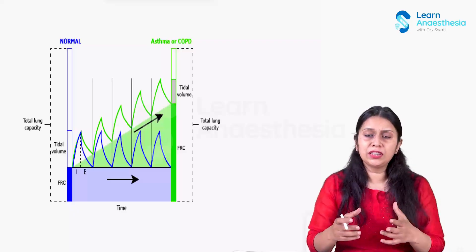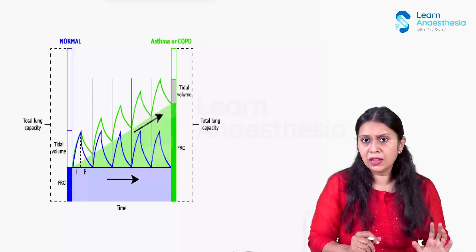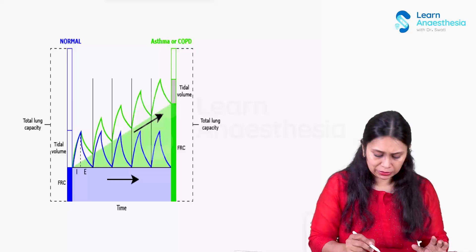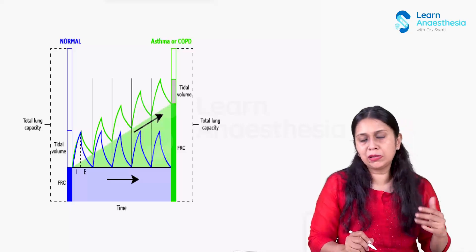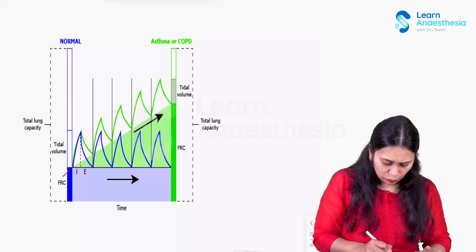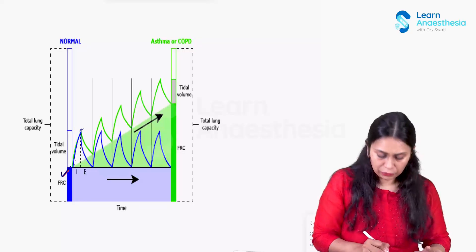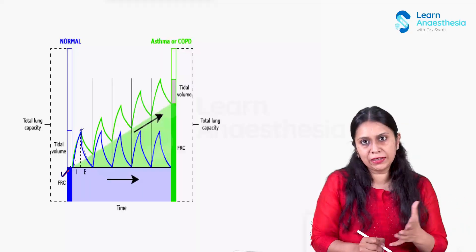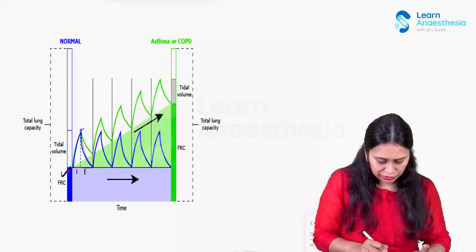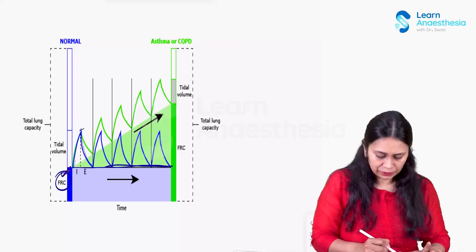That is alveolar distension due to incomplete exhalation. The blue one is normal and the green one is incomplete exhalation as happening in a COPD or asthma patient. In the blue one, inspiration happens at normal tidal volume and expiration of the expired tidal volume occurs, touching the baseline — reaching the FRC.